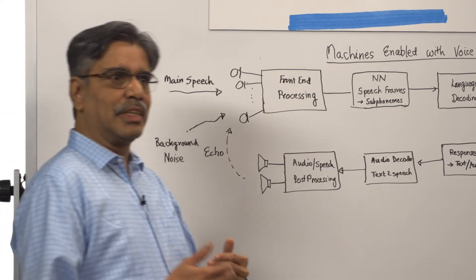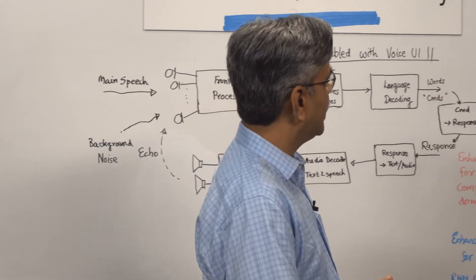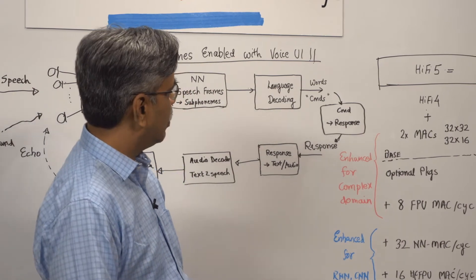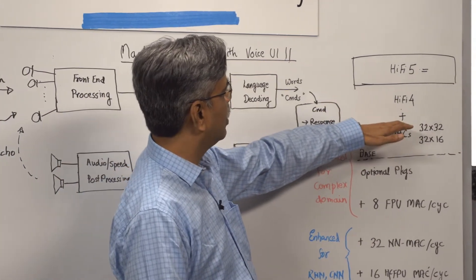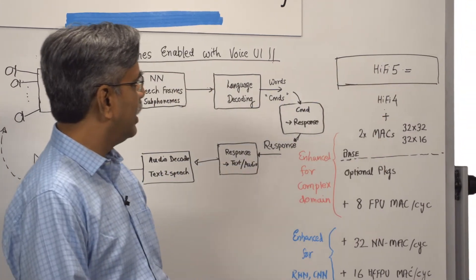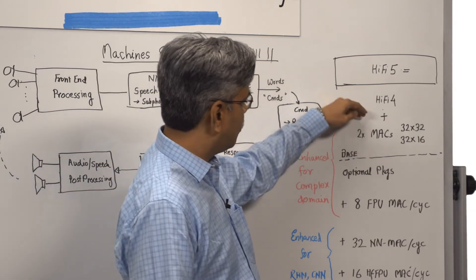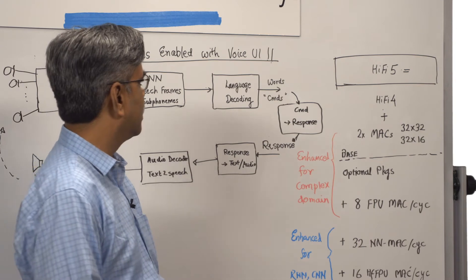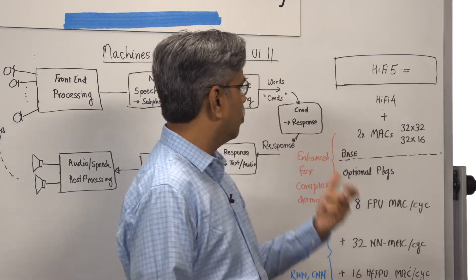However, now HiFi 5 is being introduced to really double its capability. If I look at HiFi 4 versus HiFi 5, you can see that we have doubled the number of fixed-point MACs that are required for this front-end complex domain processing.